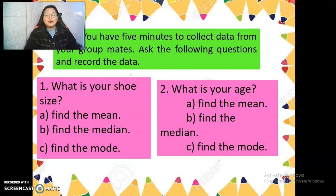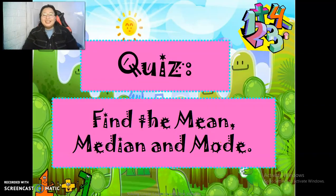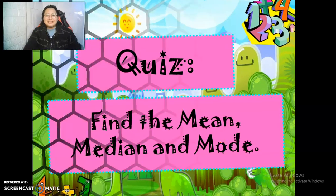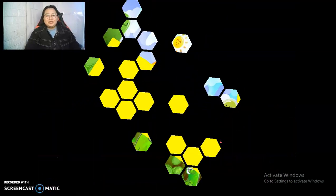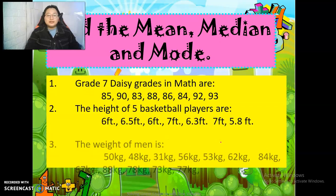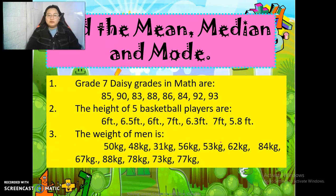All right, if you are done. Thank you, everyone, for your efforts. All your answers are correct. Very good. That's so easy, right? Now, let's have a quiz. Find the mean, the median, and the mode. You need a whole sheet of paper for this. You are going to answer these questions.